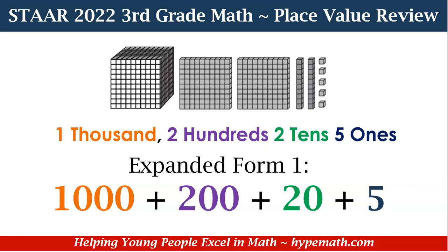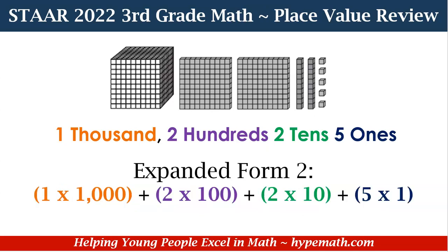Let's look and see the second way we can write it. Another way we can write it is by multiplying each of the place values. So for 1,000, we have 1 times 1,000 plus 2 times 100 plus 2 times 10 plus 5 times 1. And that again equals 1,225.